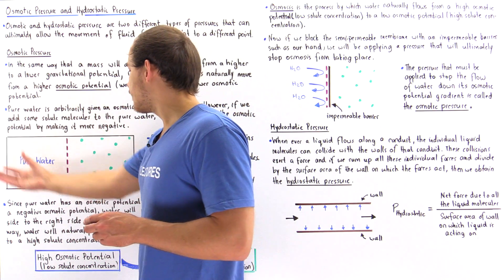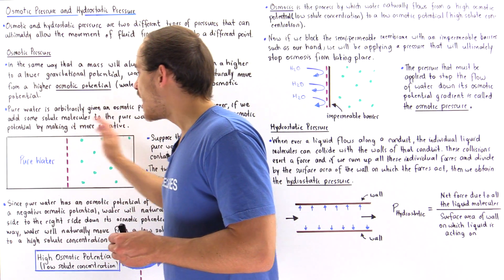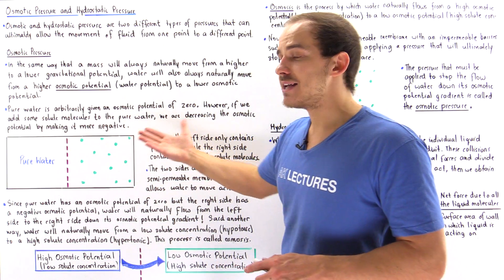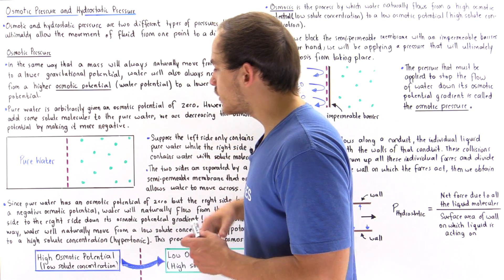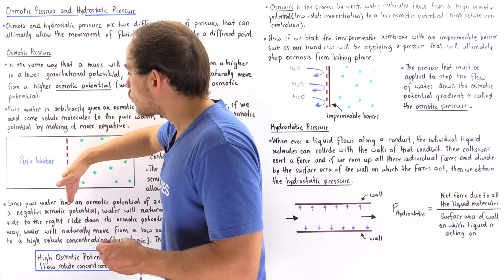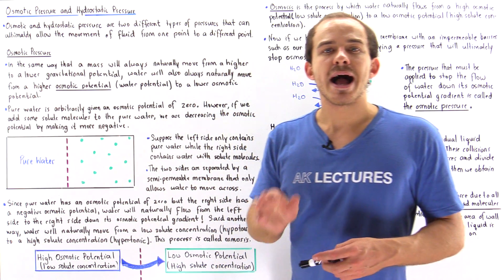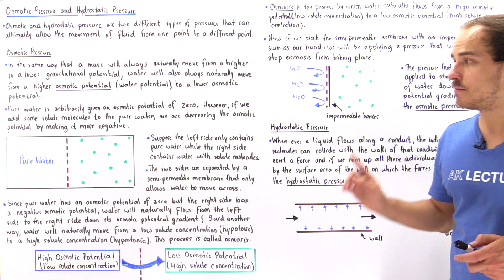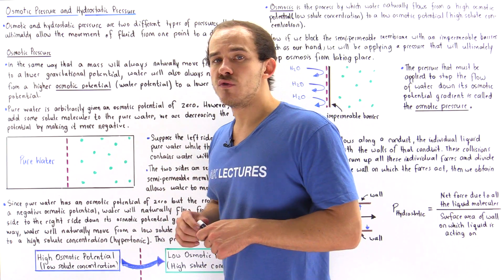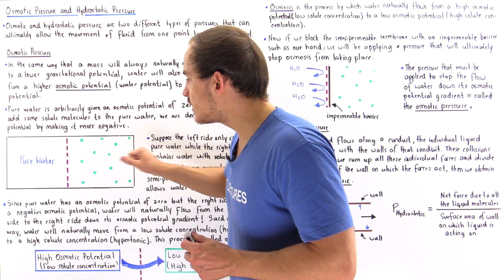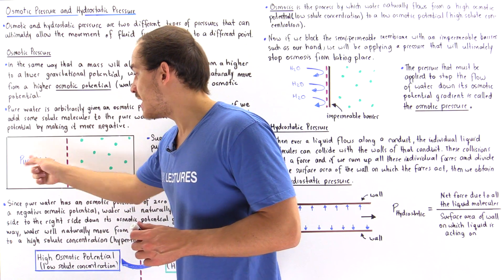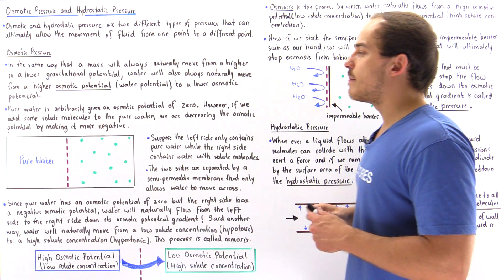Consider a closed container: on the left side we have pure water, and on the right side we have water along with additional solute molecules — the green molecules, for example sodium ions. Separating the two sides is a semi-permeable membrane with small pores that allow water molecules to pass through but do not allow the solute molecules to cross.